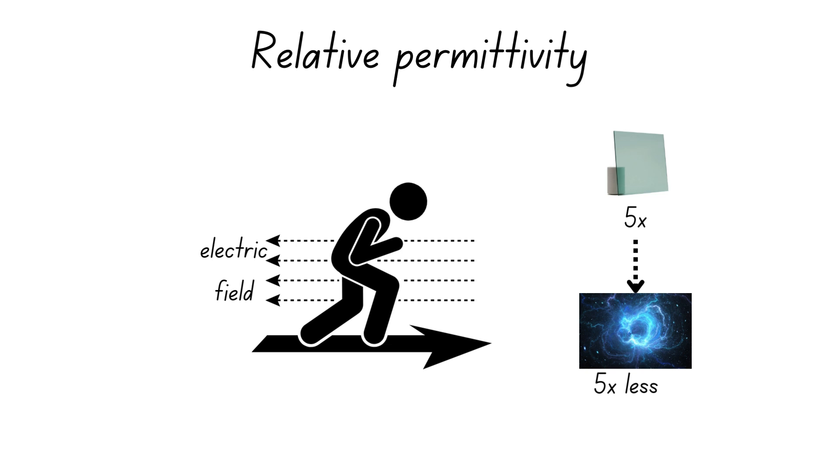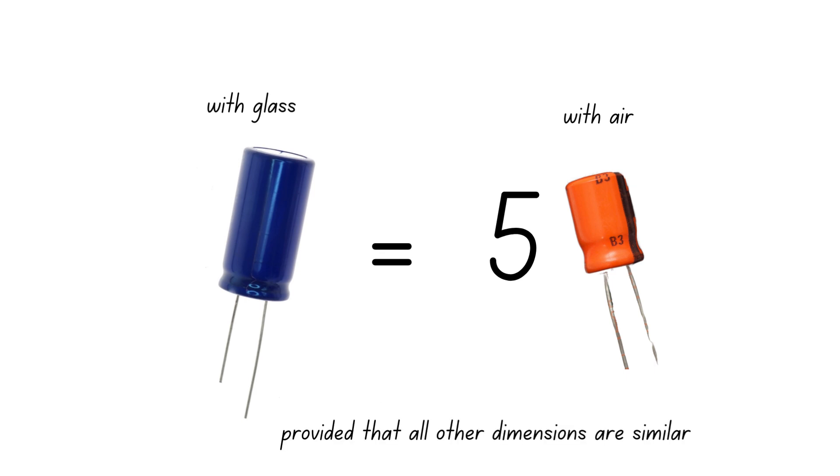So, a capacitor with a glass dielectric has 5 times the capacitance of that with air in between, provided that all other dimensions are similar.